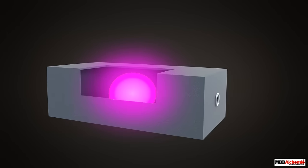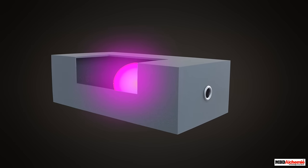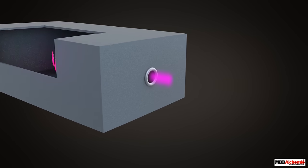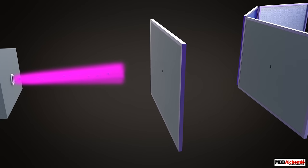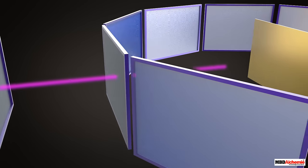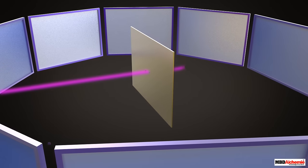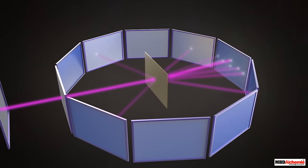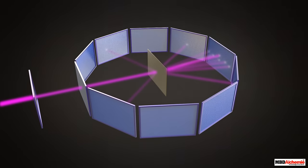Alpha particles emitted from the radioactive source passed through the hole and entered into the slit to get streamlined. The thin streams of the particles then bombarded the gold foil and got scattered in different directions.